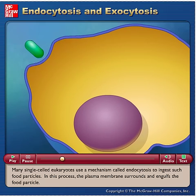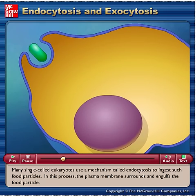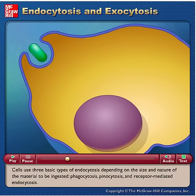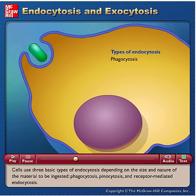In this process, the plasma membrane surrounds and engulfs the food particle. Cells use three basic types of endocytosis depending on the size and nature of the material to be ingested: phagocytosis, pinocytosis, and receptor-mediated endocytosis.